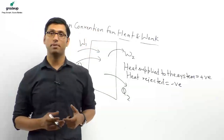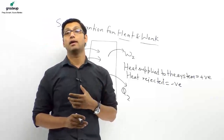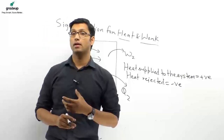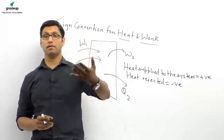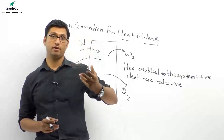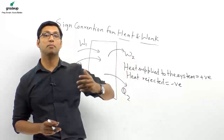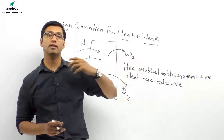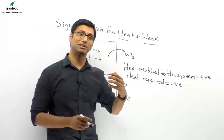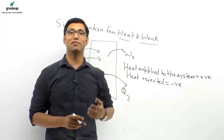Heat rejected is always negative; heat supplied is always positive. For example, in a Rankine cycle condenser, heat rejection takes place — that is negative. In the boiler, we supply heat — that is positive.